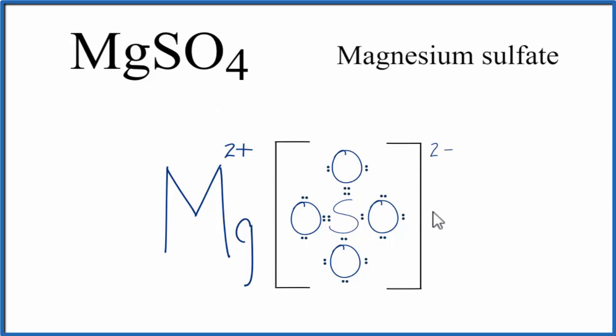In drawing the Lewis structure for magnesium sulfate, we have these brackets around the sulfate. That's to show that the magnesium lost electrons to the sulfate, and that they're not sharing those electrons like they would in a covalent bond.